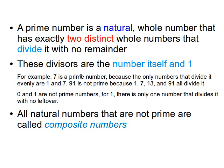For example, seven is a prime number because the only numbers that divide it evenly — without a remainder — are one and seven. However, 91 is not a prime number, because we can divide 91 by one, by seven, by thirteen, and by 91 itself. That's more than two divisors. Zero and one are also not prime numbers: dividing zero by zero is undefined, and for one, the only number that divides it without a remainder is one itself, so there's only one divisor, not two.